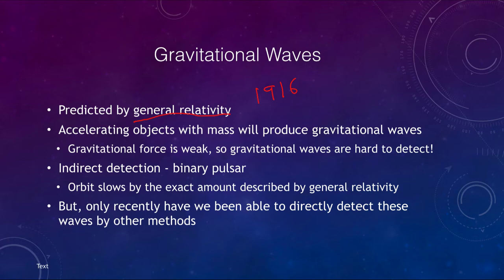Any accelerating object with mass will produce gravitational waves. That can mean you, that can mean me, that can mean the Earth, the Moon, the Sun — anything that is accelerating will produce these gravitational waves.